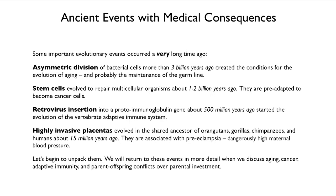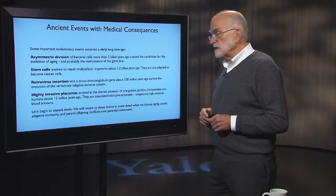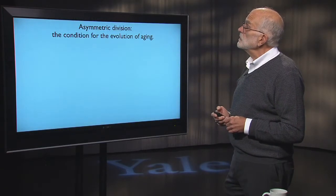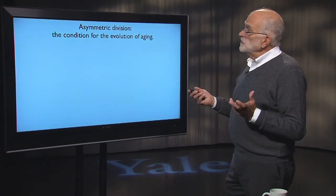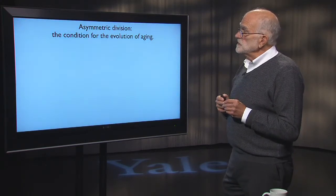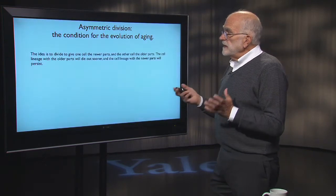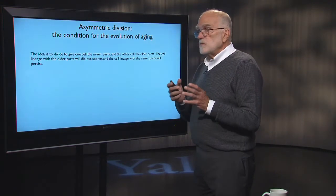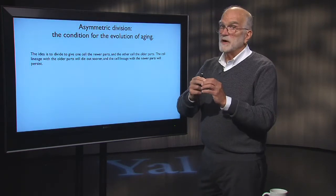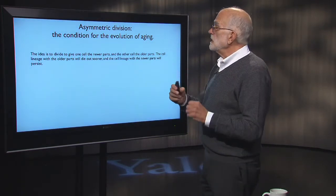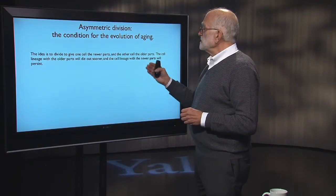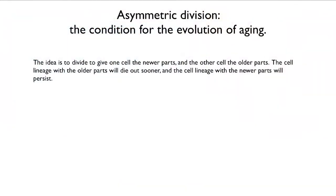Let's start to take these apart. We're going to go into each of these in more detail when talking about aging, cancer, adaptive immunity, and parent-offspring conflicts over parental investment. The first one — very ancient, three billion years old — is asymmetric division. When one bacterial cell divides asexually, one daughter gets newer parts and the other gets older parts. So we can identify a difference between a daughter who is younger and a mother who is older.